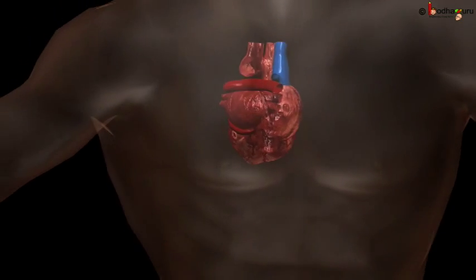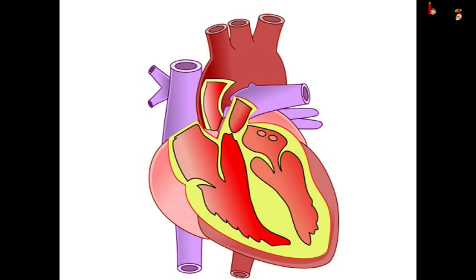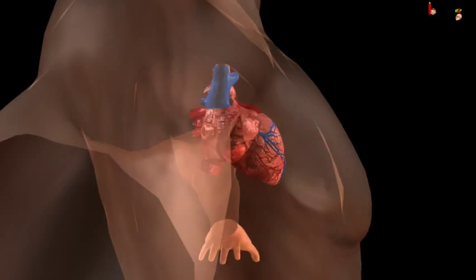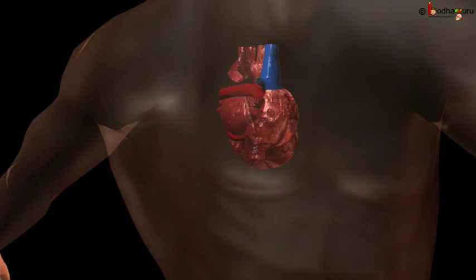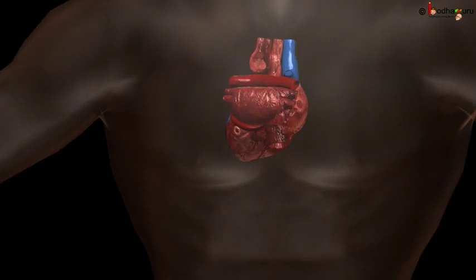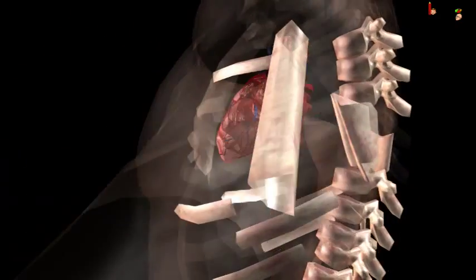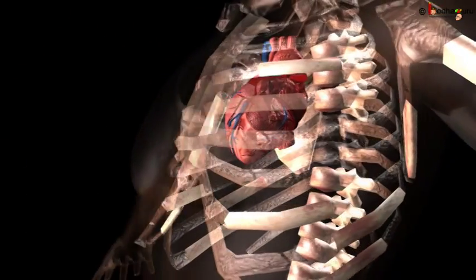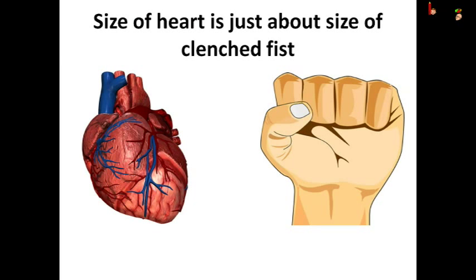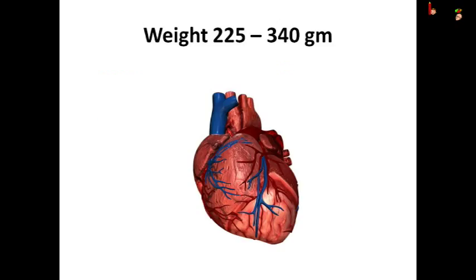Now, how does the heart pump blood using the heartbeats? Let us know our heart better. Our heart is a muscular organ located in the chest cavity, slightly towards the left, and it is protected by the rib cage. The size of the heart is not too big — it is just about the size of your clenched fist, and it weighs about 225 to 340 grams.